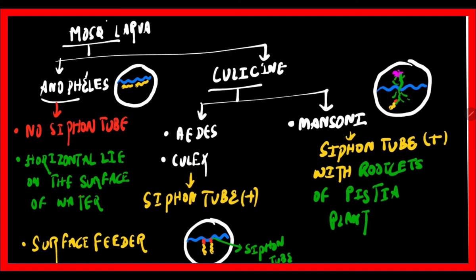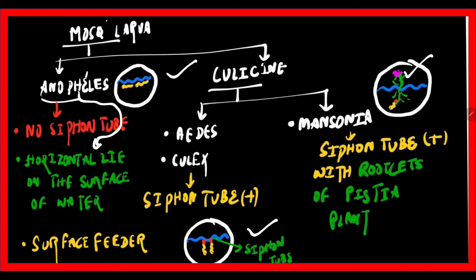Coming to the larval stage: one important thing to remember is that Anopheles larvae do not possess a siphon tube, whereas Aedes, Culex, and Mansonia possess a siphon tube. The siphon tube of Mansonia is attached to the rootlets of the Pistia plant, which is really important. In Aedes and Culex, they have a siphon tube, of which Culex has a long siphon tube. Anopheles larvae lie horizontally, parallel to the surface of water, because they lack a siphon tube — they are surface feeders.